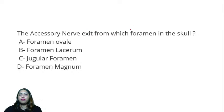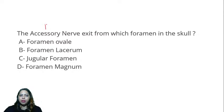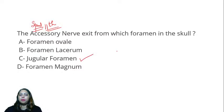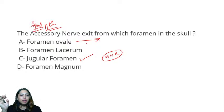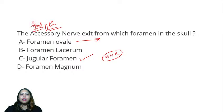Next question: the accessory nerve (11th cranial nerve, also called spinal accessory) exits from which foramen in the skull? The answer is the jugular foramen — cranial nerves 9, 10, and 11 all exit through it. Foramen ovale transmits: mandibular nerve, accessory meningeal artery, lesser petrosal nerve, and emissary vein (mnemonic: MALE). Foramen lacerum transmits only fibrous tissue. Foramen magnum transmits: spinal cord, meninges, anterior and posterior spinal arteries, medulla oblongata, and ligaments.